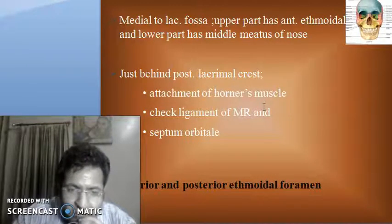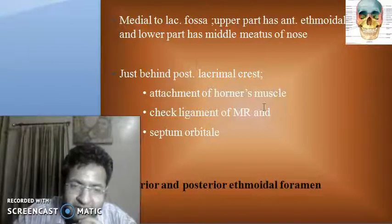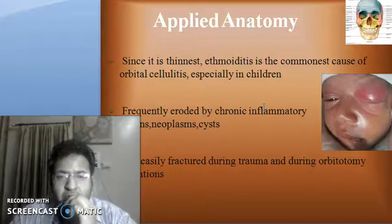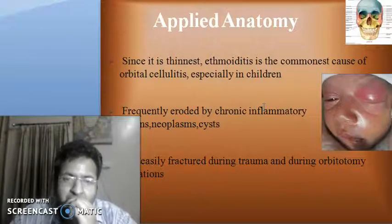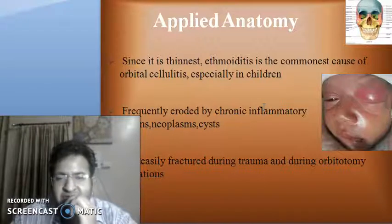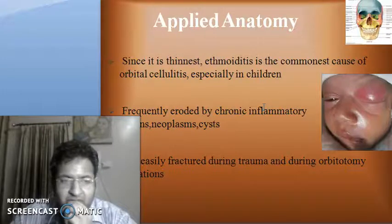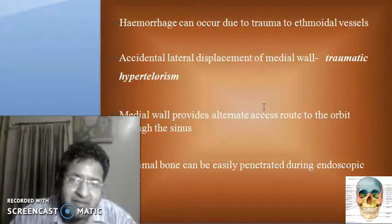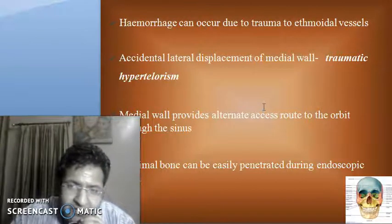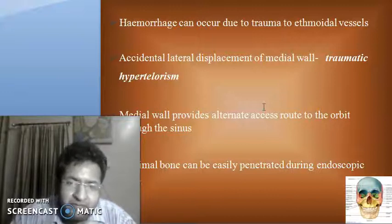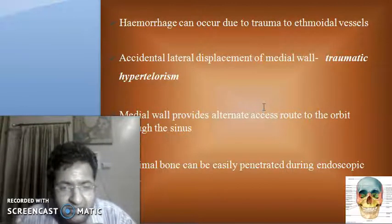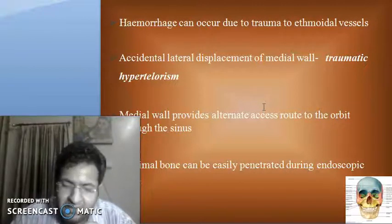There are also the anterior and posterior ethmoidal foramina present in the medial wall, through which the anterior and posterior ethmoidal vessels enter the nasal cavity from the orbit. The applied anatomy of the medial wall: ethmoiditis is the most common cause of orbital cellulitis, especially in children. This wall is frequently eroded by chronic inflammatory lesions, neoplasm, and cysts. The medial orbital wall is easily fractured during trauma and during orbitotomy operations. Accidental lateral displacement of the medial wall results in traumatic hypertelorism. The medial wall also provides an alternate access route to the orbit through the sinuses and helps in DCR operations, as the lacrimal bone can be easily penetrated through endoscopic DCR.